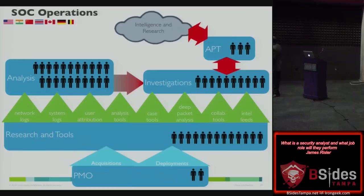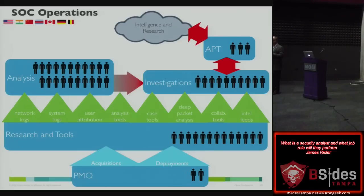This is another slide looking at our SOC operations center. Intelligence and research generates leads about potential APTs. The investigators are looking and generating data back and forth. The analysts are pumping data over to investigation. Look at all the tools they're using: network logs, system logs, user attribution, analyst tools, case management, deep packet analysis — all that's being fed up to the investigators so they can correlate that data together to figure out what's going on. The hackers have gotten smart — they don't just come in and make a bunch of noise anymore. They move very stealthily through your network in such a way that they won't generate any alarms. They want to be under the covers for a while, hoping you're not looking.